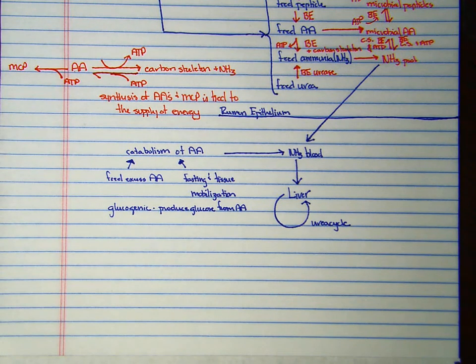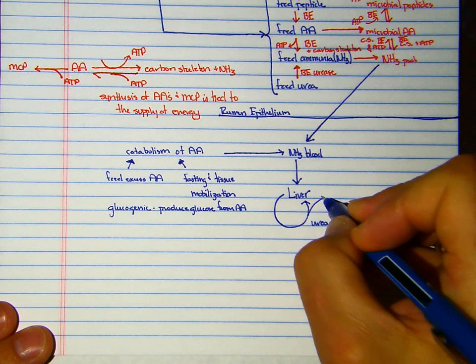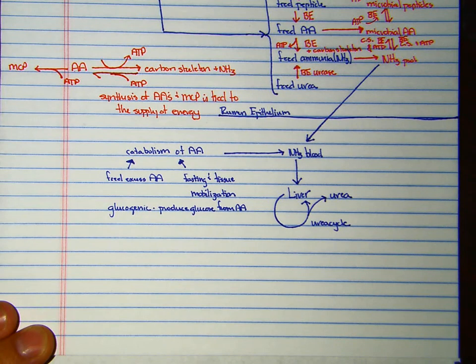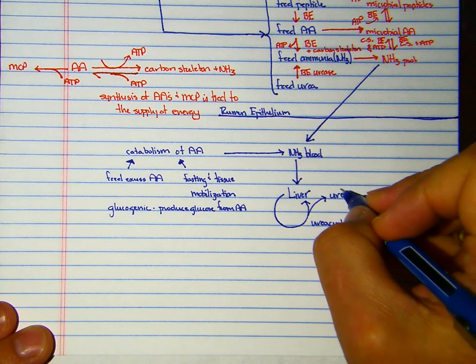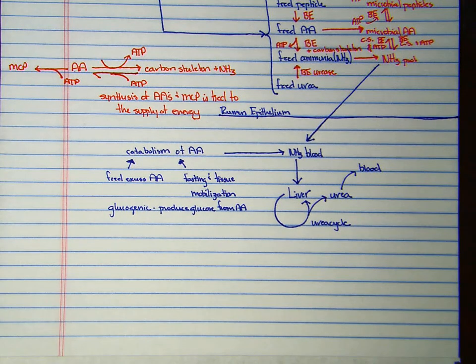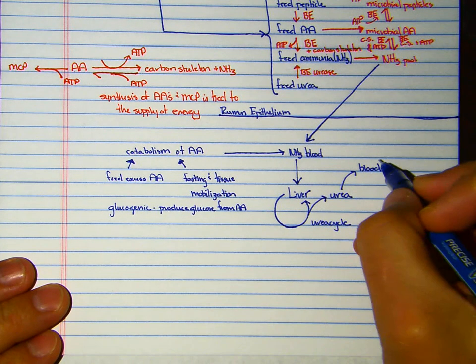The urea cycle is going to take ammonia and, as you may have guessed, produce urea. That urea then enters your blood, and it's safe to have urea in the blood—doesn't hurt you.